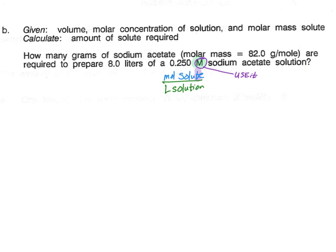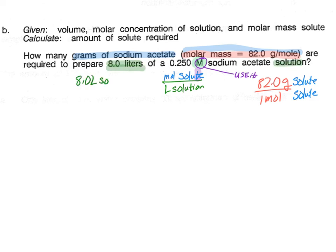We are looking for grams of sodium acetate — our solute. We know the molar mass is 82 grams per mole, written as a ratio. We have 8 liters of solution, and we know the molarity is 0.250 moles of sodium acetate per liter of solution — also a ratio. We have three numbers: 82 g/mol, 8 liters, and 0.250 mol/L. I prefer to start with a value that is not a ratio, so we start with 8 liters.